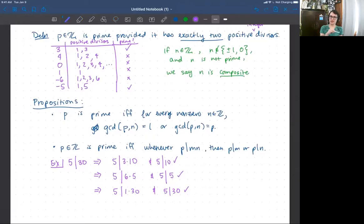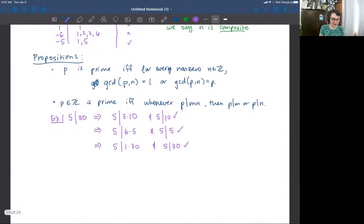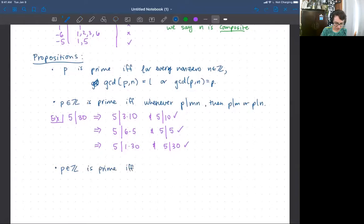And we'll see a way in which this characterization of prime generalizes really nicely to another way of thinking about prime-like stuff in a different setting. And then there's one other way of saying this, which is just a souped up version of this one. So an integer P is prime if and only if whenever P divides a bunch of, a product of a bunch of things, it's going to divide one of the factors. Then P divides mj for some j.